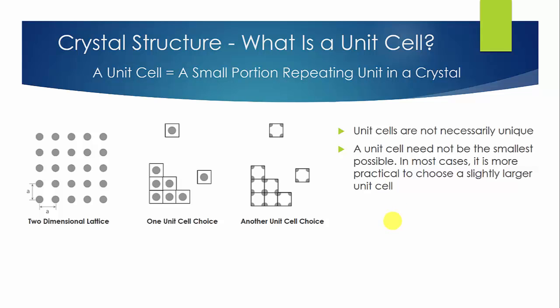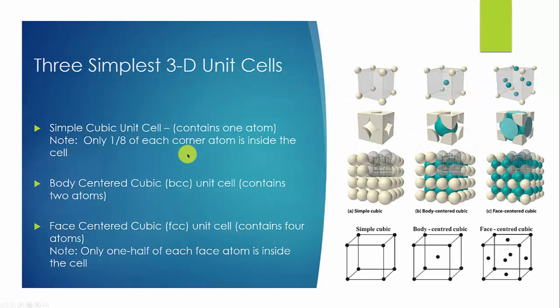Semiconductor crystals are three-dimensional. Here, we are introducing three simplest three-dimensional unit cells. The first one is called the simple cubic cell. Just as its name says, it is an equal-sided cube with one atom at each corner of the cube. However, pay attention that there is actually only one-eighth of each atom inside the cell at each corner. There are eight corners, so a simple cubic cell actually contains just one atom.